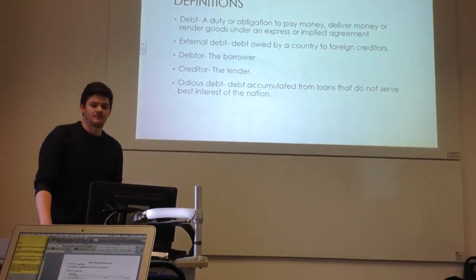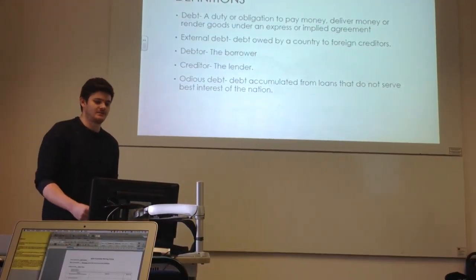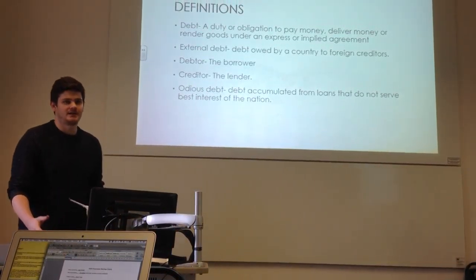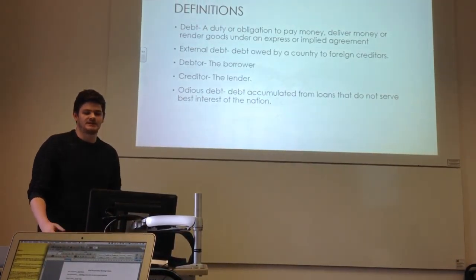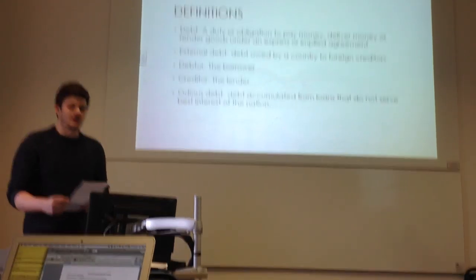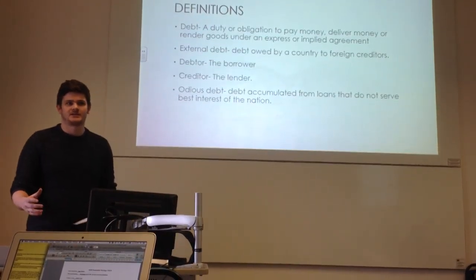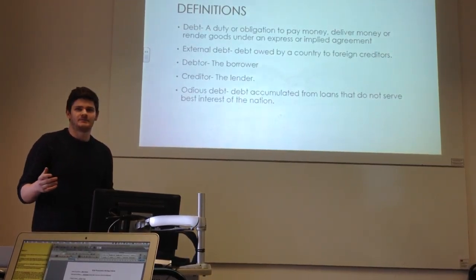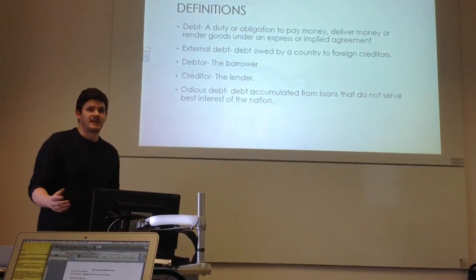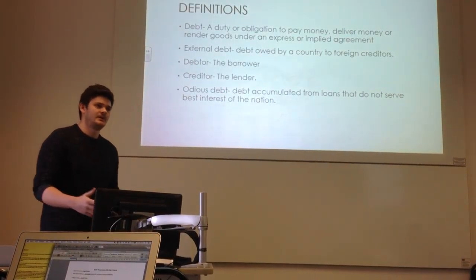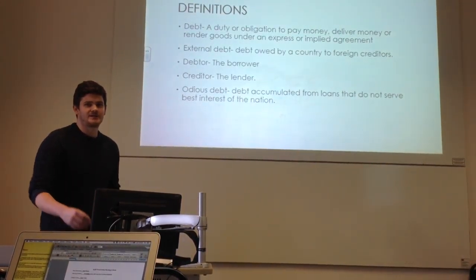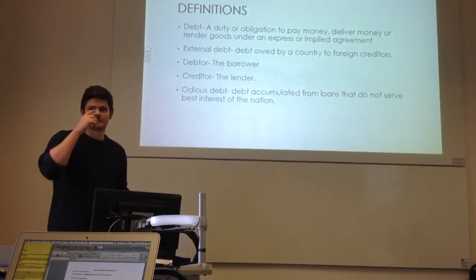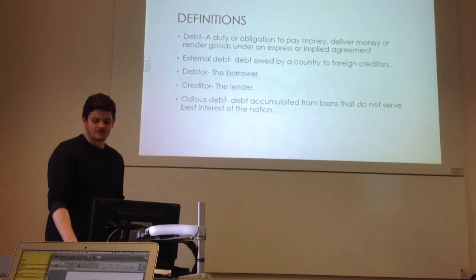External debt is debt owed by a country to foreign creditors as opposed to internal debt. Debt to the borrower, credit to the lender. And then odious debt, which is debt accumulated from loans that do not serve the best interest of the nation. An example is debt accumulated by South Africa during the apartheid regime — the loans didn't go to the best use of the nation, but outside of the apartheid regime, where the Nationalist Party was no longer in power, those debts still remain with the country.